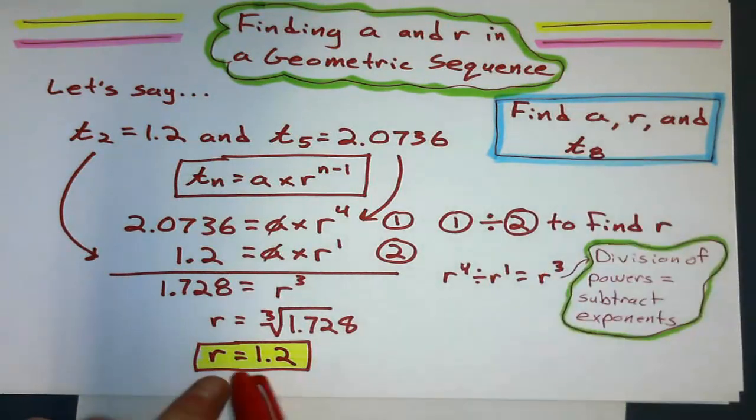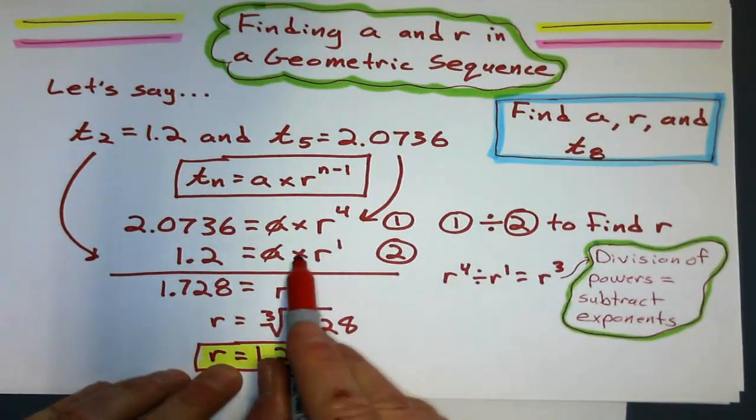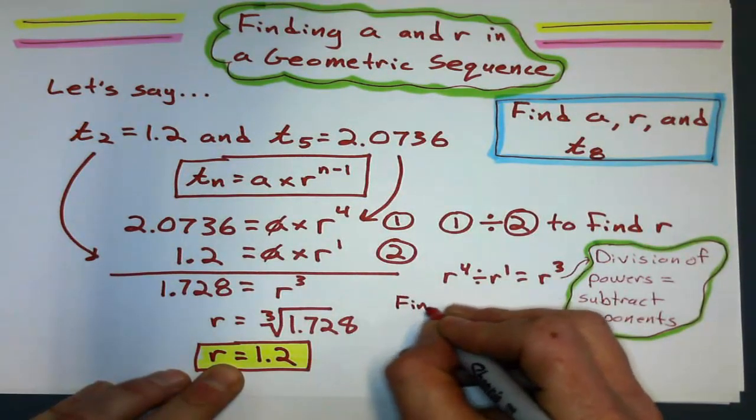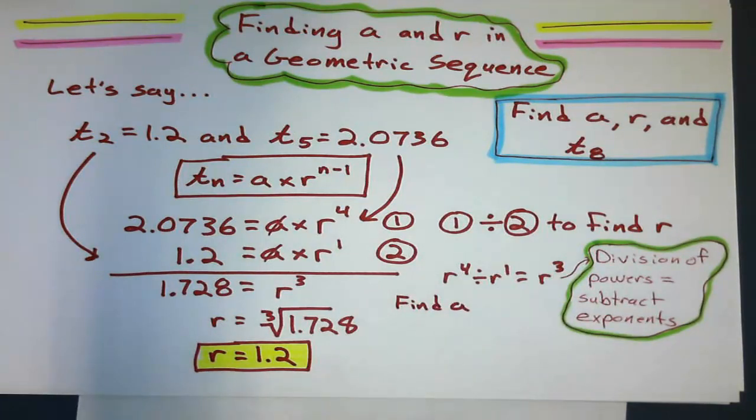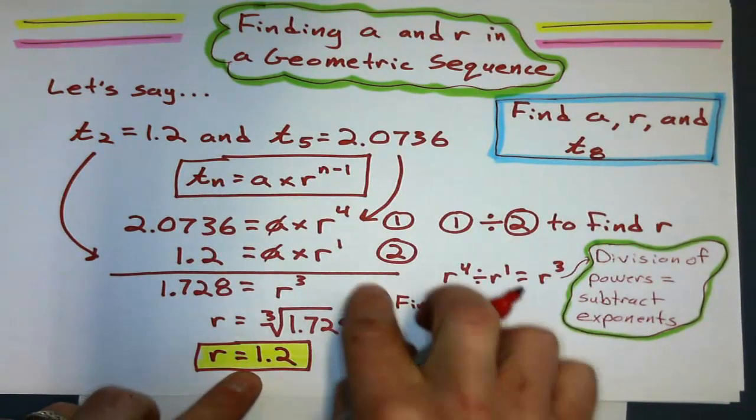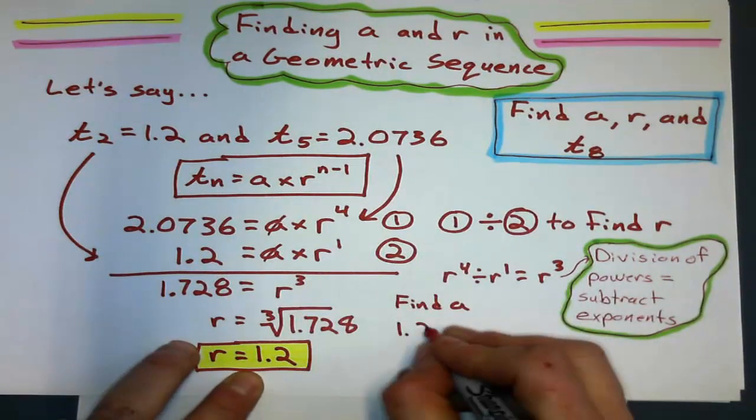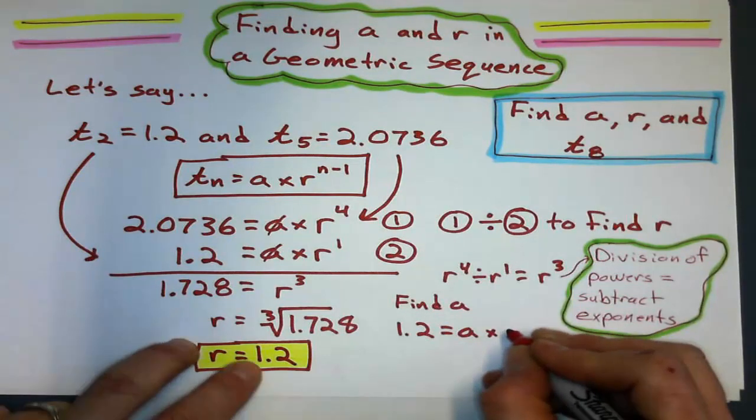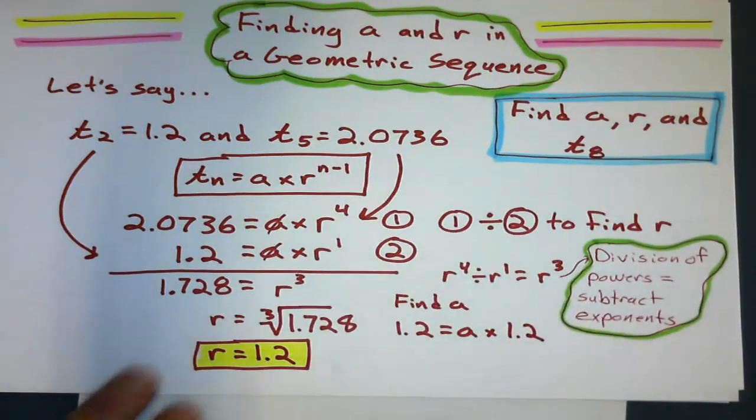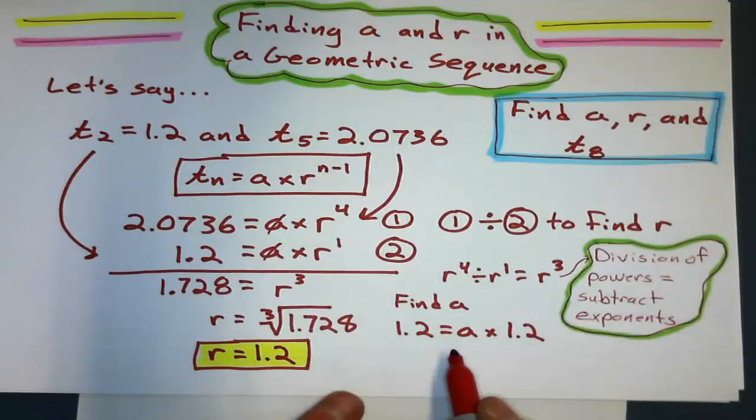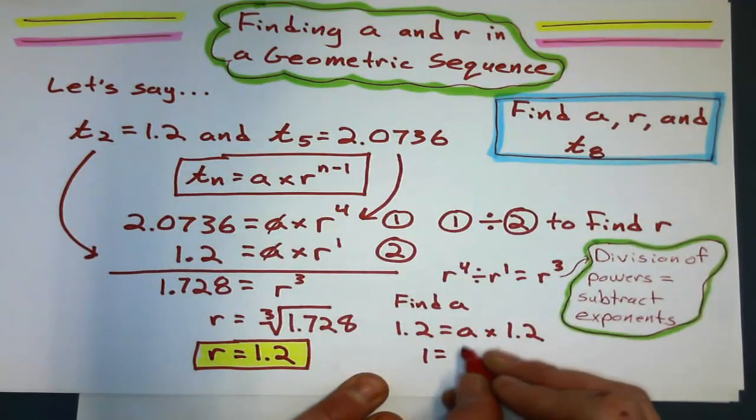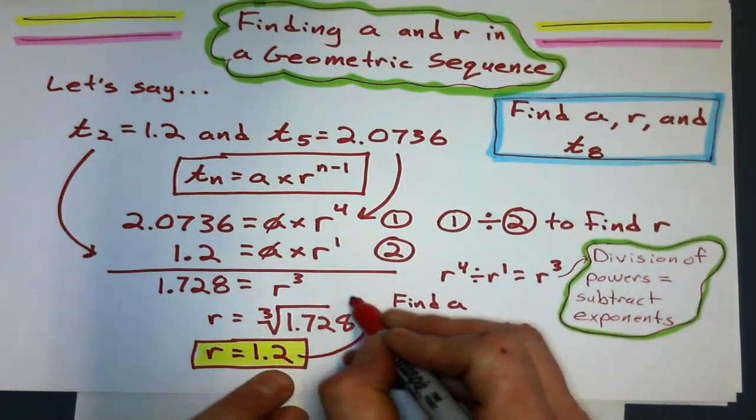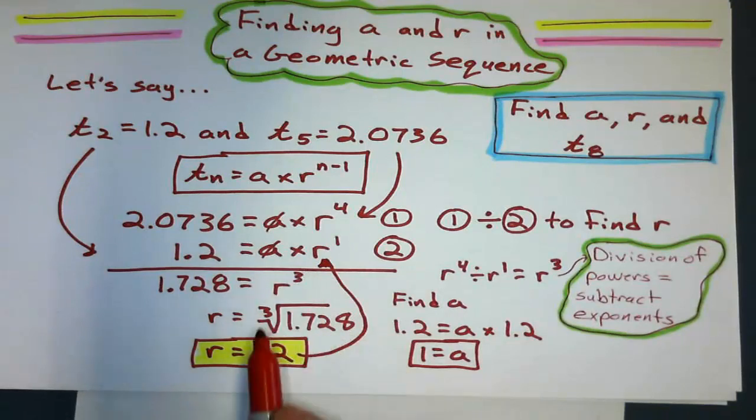So okay, I've done all right. Now let's use that, and I'm going to substitute that into one of the equations to find a. Substitute to find a, find my first term. Well, why don't I plug it back into this equation here and say 1.2 equals a times my common ratio, 1.2. Well, that's a pretty easy equation to solve, because a is just going to equal 1.